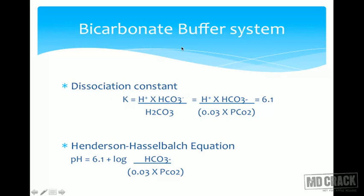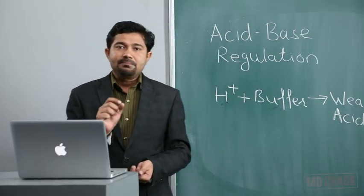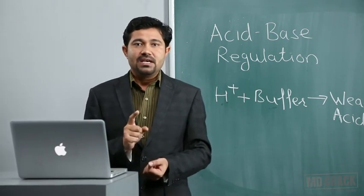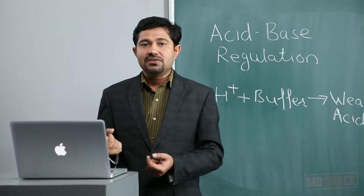The dissociation constant for the bicarbonate buffer system is: K = [H+][HCO3-] / [H2CO3]. Since H2CO3 immediately dissociates into CO2 and H2O in the body, we use pCO2 × 0.03 (its solubility coefficient) to estimate [H2CO3]. The dissociation constant (pK) for the bicarbonate buffer system is 6.1, meaning it is maximally active around pH 6.1.